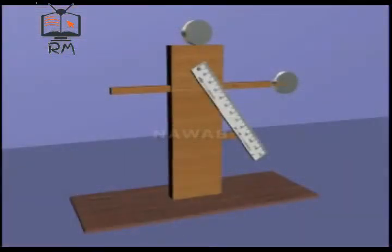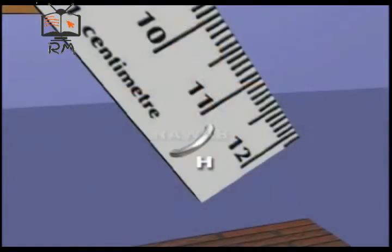Value of g by free fall method: Gravitational acceleration g can be determined using a simple method known as free fall method. The apparatus consists of a 1 meter long wooden bar fixed at point O. P and Q are two pulleys whereas H is a hook.